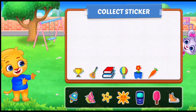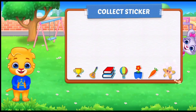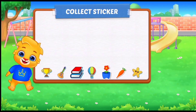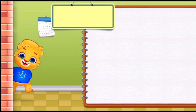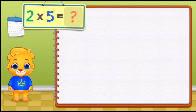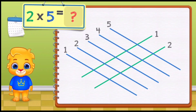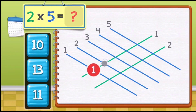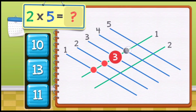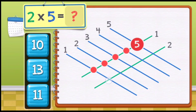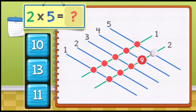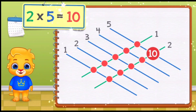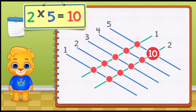Pick a sticker. Two times five equals: one, two, three, four, five, six, seven, eight, nine, ten. Two times five equals ten.